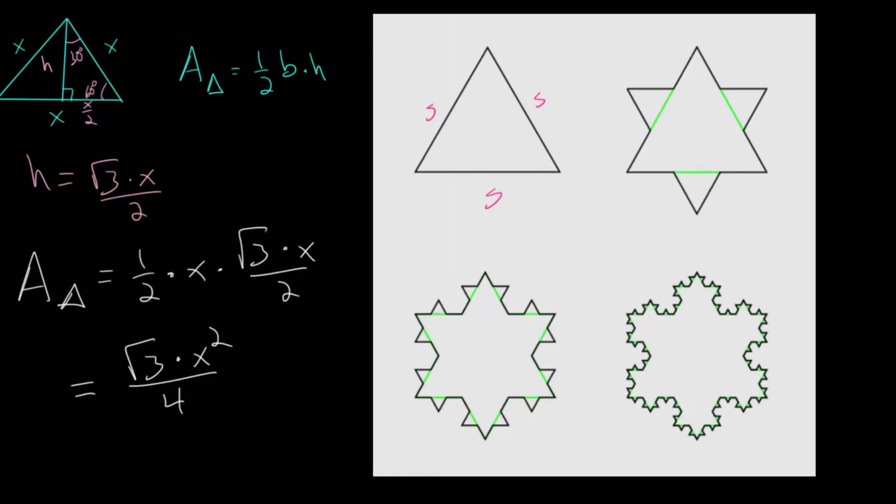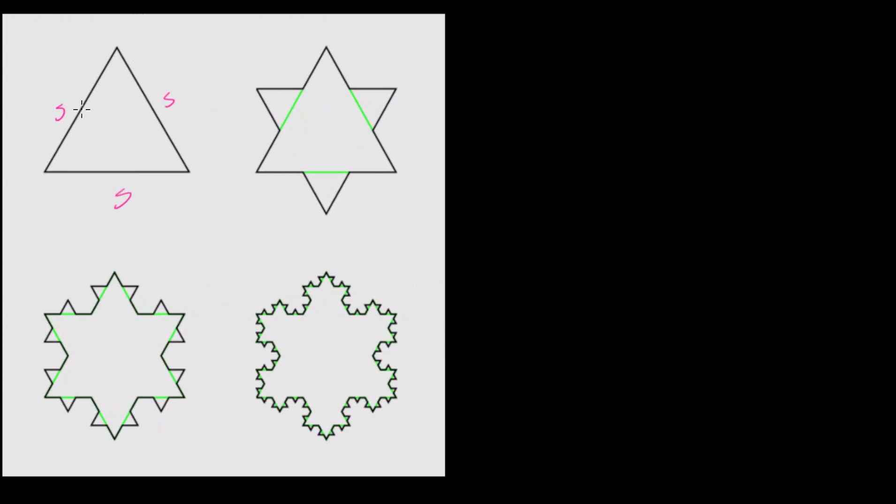Now going back to our picture here of the steps of creating the Koch snowflake, we know this is our step 0 or starting point.